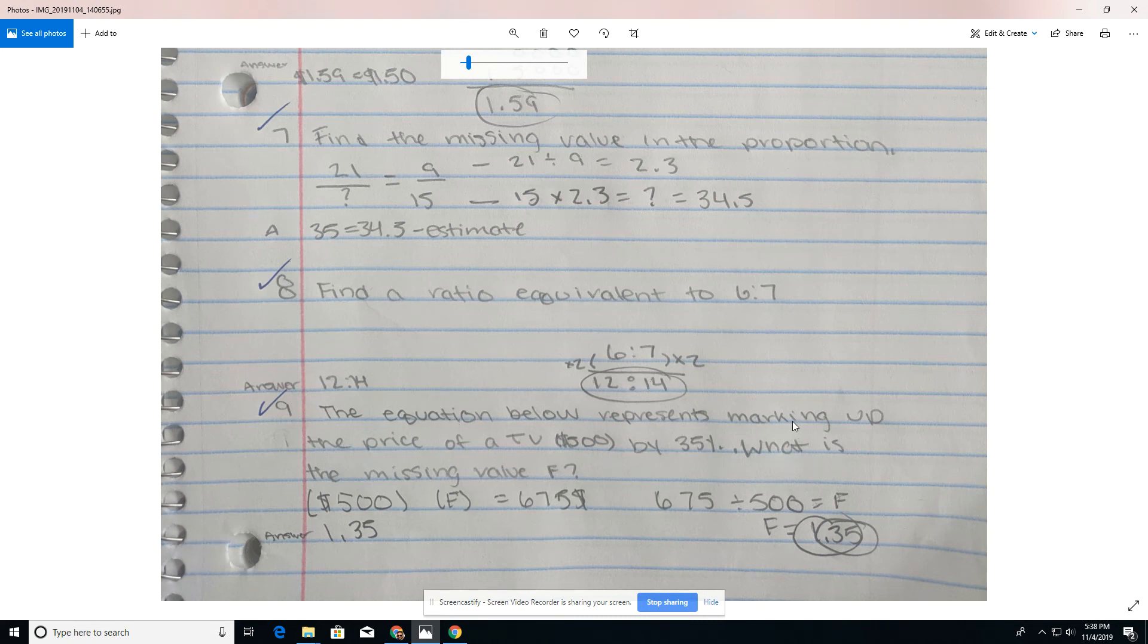Number nine, the equation below represents marking up the price of a TV, $500 by 35%, find the missing value F. So this is asking them, what do I multiply 500 by to get the answer 675? Here, the students would hopefully recognize that this decimal represents 135% of the original cost. Now they prove that by actually showing the multiplication, or in this case, the student created basically a ratio and divided. And she found some proof here. This is enough evidence that this is the correct answer. If a student substituted this in for the missing value F, showed the multiplication and got 675 as an answer. That would also be enough evidence to show that this answer is correct. 1.35 represents 135% of the original number.